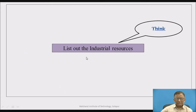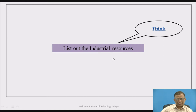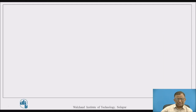Just pause the video for some time and think over all the industrial resources where one-to-one allocation is needed with a specific objective to satisfy. List out such resources which are being required in the industries.